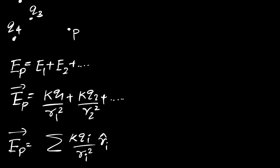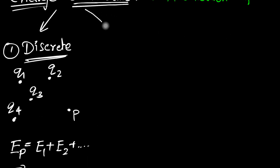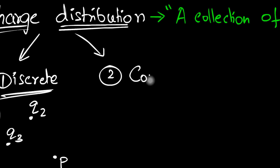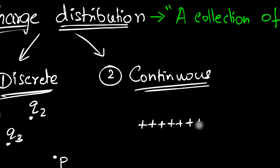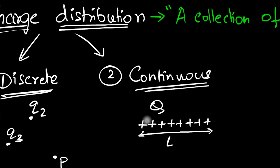What if we don't have a discrete charge distribution, but the second kind, which is called a continuous charge distribution? This is where you cannot identify individual charges. Suppose we have charges distributed over a line — it's continuous over the entire length, and we could say there's a total charge q. We cannot identify q1 here and q2 there; it's a continuum. That's the whole idea behind continuous charge distribution.